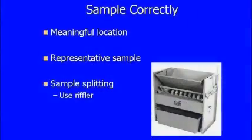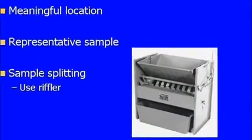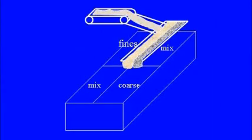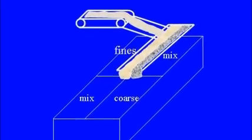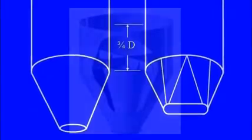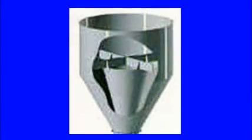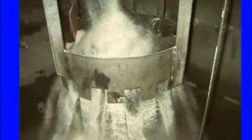Joe describes sampling techniques and their effect on segregation, as well as several approaches to solving typical segregation problems, such as changing your process, changing your material, or changing your equipment to minimize the effects of segregation. A unique approach to solving segregation problems, known as cone-in-cone design, is also described.